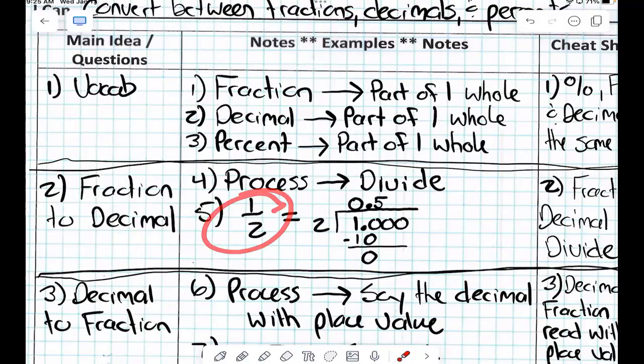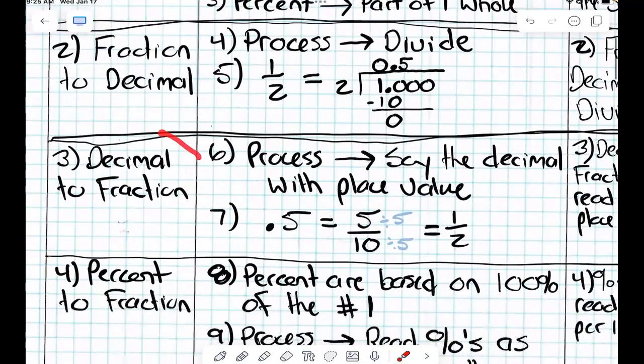So if I have one half, I simply do the division problem to get my decimal, right? OK, last. How do you convert from a decimal to a fraction?